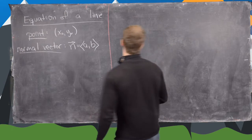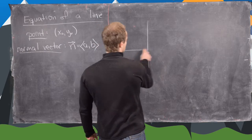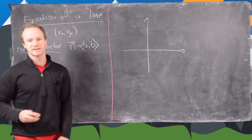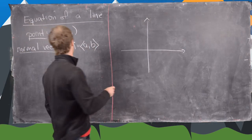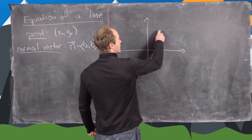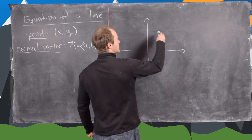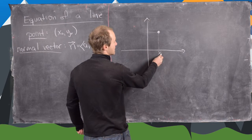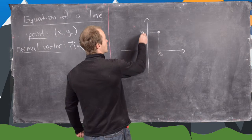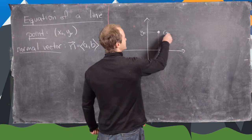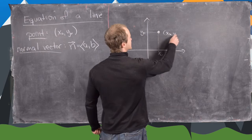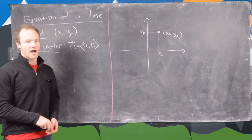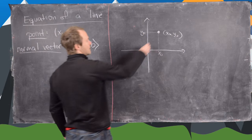So let's sketch up what's happening here. There's our xy-axis, and let's say we know this point right here, given by x-naught, y-naught. We know this point is on the line, and let's say our line goes a bit like this.